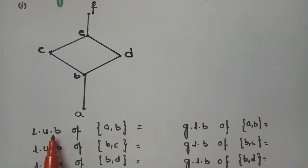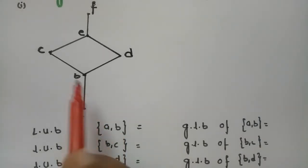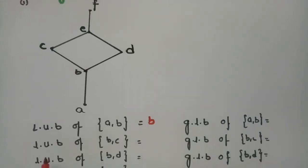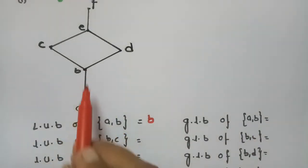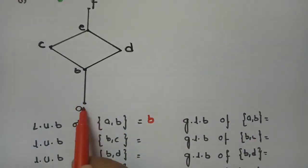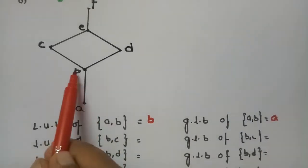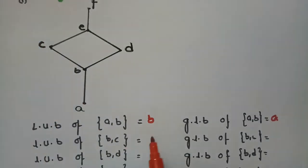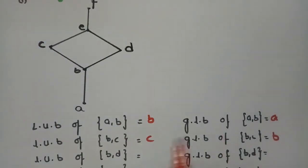Let's get started. For the first pair (a, b): the upper bound is b and the lower bound is a. Coming to (b, c): the upper bound is c and the lower bound is b. Next, coming to (b, d): the upper bound is d and the greatest lower bound is b.